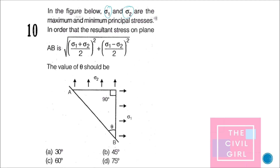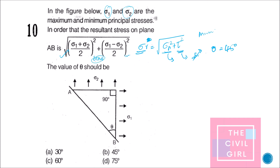Last question: sigma 1 and sigma 2 are the maximum and minimum principal stresses. For the resultant stress on a plane to equal the given value, what should theta be? The resultant stress squared equals sigma_n² + tau². Since the given expression has no sine or cosine theta terms, and we know sigma_n and tau both involve sin/cos theta, this only holds when theta = 45°, where maximum shear stress occurs. So theta = 45° is the answer.